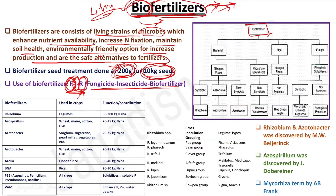Biofertilizers are classified into different groups based on their microbial composition — they can be bacteria, algae, or fungi. Bacterial biofertilizer can be nitrogen-fixing or phosphate-solubilizing. Nitrogen-fixing biofertilizers are further classified into symbiotic nitrogen fixers, associative nitrogen fixers, and free-living or non-associative nitrogen fixers.